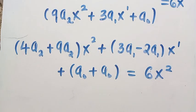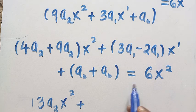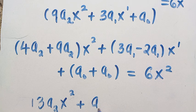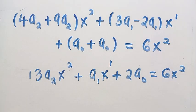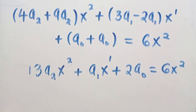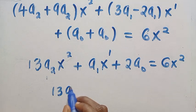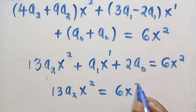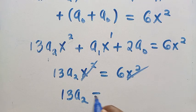Combining like terms: 4a₂ plus 9a₂ gives 13a₂, so we have 13a₂x² plus (3a₁ minus 2a₁)x plus 2a₀ equals 6x squared. Matching the x² terms on both sides: 13a₂x² equals 6x², so 13a₂ equals 6, which implies a₂ equals 6 divided by 13.